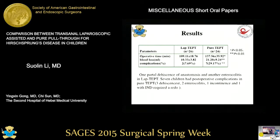50 children underwent this study, which were divided into lap-TAPT and pure TAPT groups. Lap-TAPT was completed in 26 cases, including one case where pure TAPT was forced to convert due to long segment HD. Compared to pure TAPT, using hemlock clips and an ultrasonic scalpel in lap-TAPT allowed repeated dissection and ligation of the marginal vessel, along with intraoperative biopsy, resulting in shortened operative time and decreased estimated blood loss.